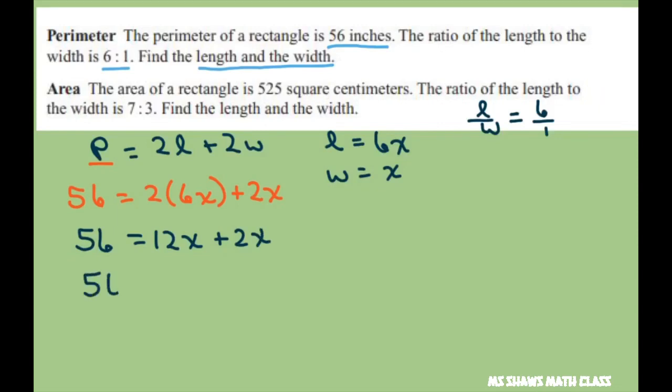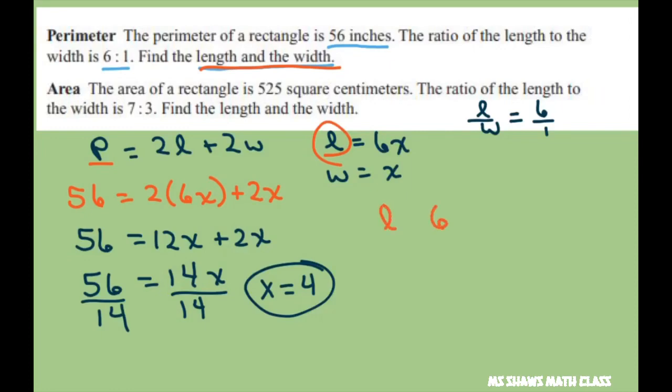So 56 equals 14X, and divide both sides by 14, so you get X equals 4. Now that X is 4, we need to find the length and the width. So our length is 6X, so length is 6 times 4.